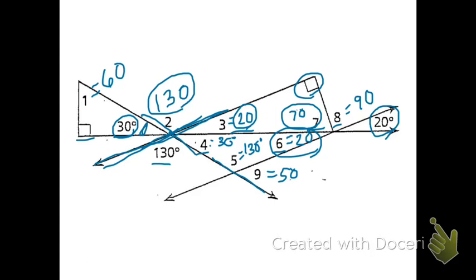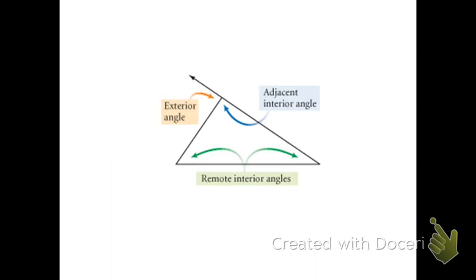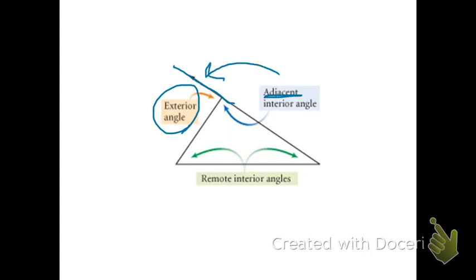Now let's look at one last thing about triangles. Before we prove anything, we want to look at the anatomy of a triangle. The three angles marked on the inside are called interior angles because they're in the interior of a triangle. We can pick one of these exterior angles and the interior angle next to it is called the adjacent interior angle. If we extend one of the sides out, the linear pair formed with that adjacent interior angle is the exterior angle. The other two interior angles are called remote interior angles because they're not adjacent to the exterior angle.